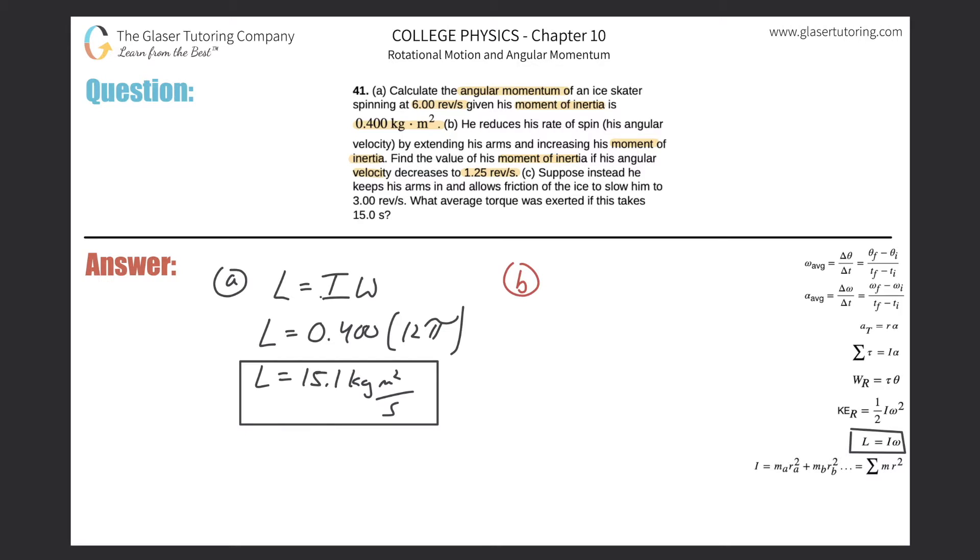So basically, you have to consider now he's slowing down because his arms are extending. However, what is being conserved? They didn't tell us anything about friction. So I'm going to assume that angular momentum is conserved. That being the case, I know that his starting angular momentum should be equal to his final angular momentum.